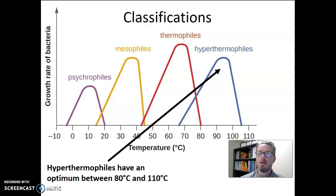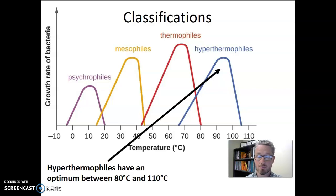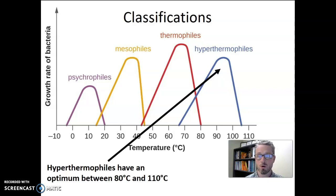Those are the major classifications of microorganisms created based on their optimum growth temperature. The goal is that you can apply these pieces of terminology — look at a graph, interpret the information, and report back the optimum, maximum, or minimum temperatures, or the correct classification for an organism based on its optimum temperature.